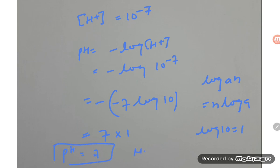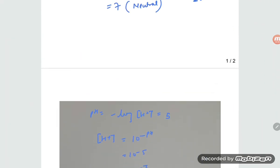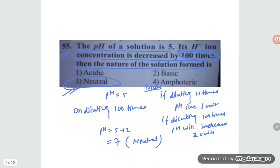pH seven means the solution is neutral. So either you can apply the shortcut trick or solve it out formally — the answer will be the same. Thank you so much for watching, dear students.